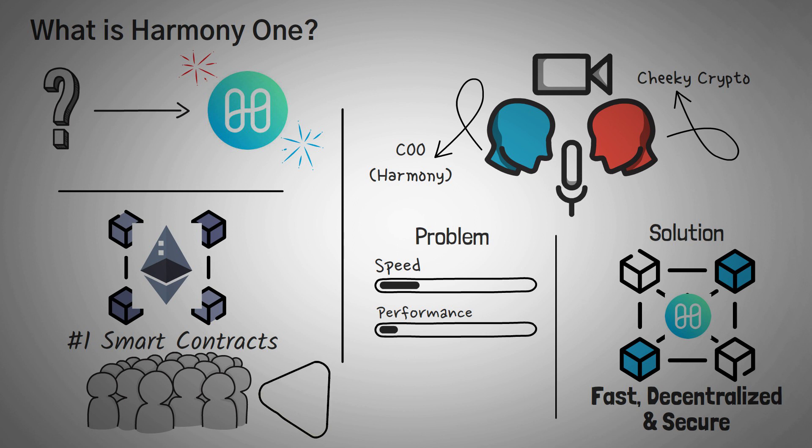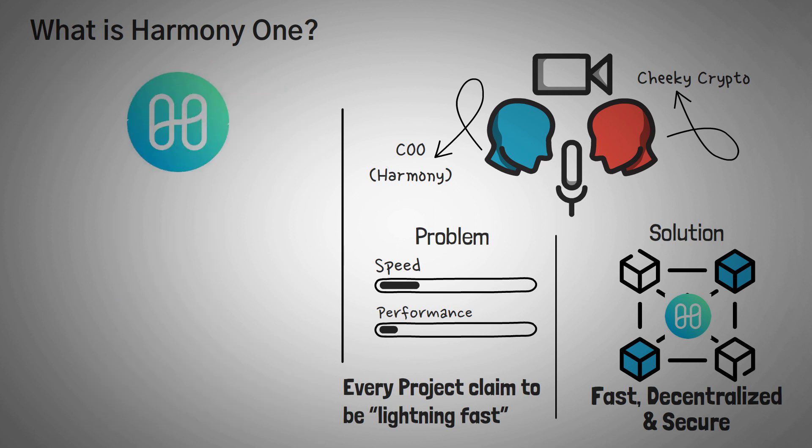So what? A ton of projects claim to be lightning fast, decentralized, and still secure, and if you've been around on this channel for a while, you know that this claim is not unique. Harmony 1, though, is very serious about speed.